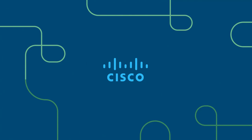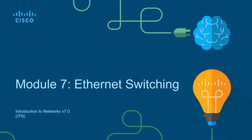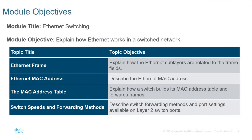Welcome to my introduction to networking course, typically abbreviated ITN. This will be for the CCNA version 7 curriculum. Welcome to lesson 7, Ethernet Switching. In this lesson we're going to be looking at Ethernet frames, the MAC address, the MAC address table, and the different ways that a switch will forward data.